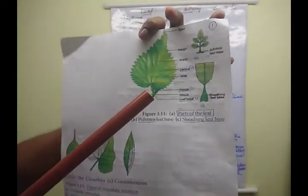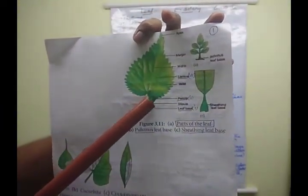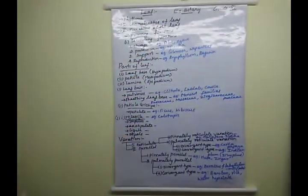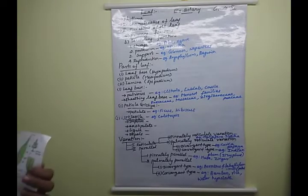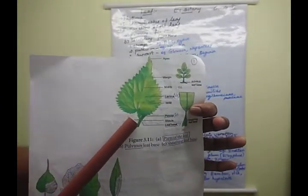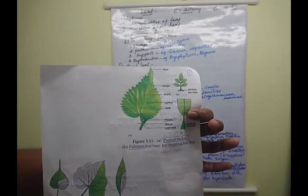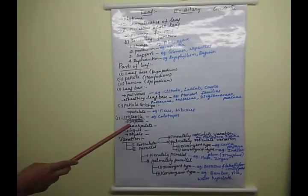What are stipules? In the leaf base region, there is a small outgrowth-like structure. Stipules are small lateral appendages or outgrowth-like structures found in dicotyledonous plants. These are called stipules. A leaf with stipules is called a stipulate leaf.